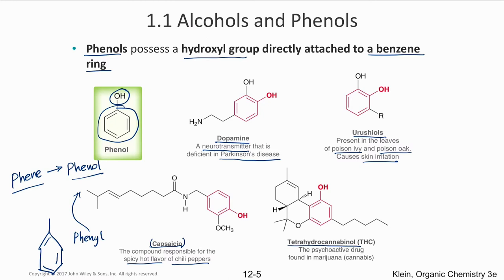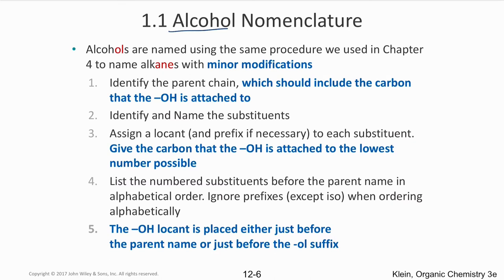Tetrahydrocannabinol (THC) is the psychoactive drug present in marijuana, responsible for euphoria. It also uses phenol as a functional group in its structure.